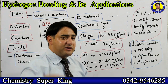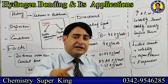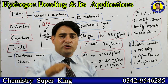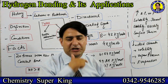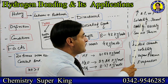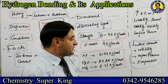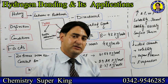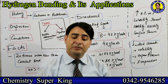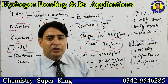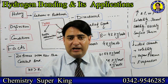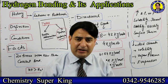Some parameters decrease due to hydrogen bonding: acid character decreases, volatility decreases, and vapor pressure decreases. MCQs ask: which of the following will decrease with an increase in hydrogen bonding? Options are boiling point, thermal stability, and vapor pressure. The answer is vapor pressure.